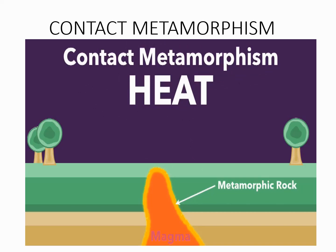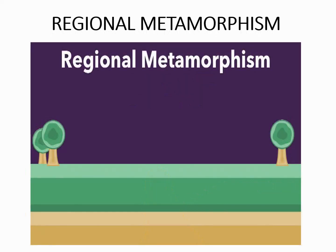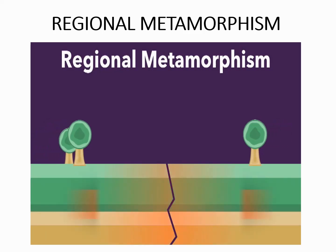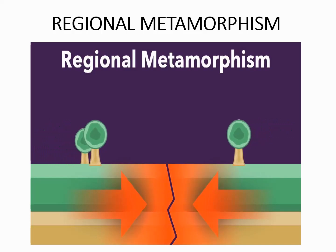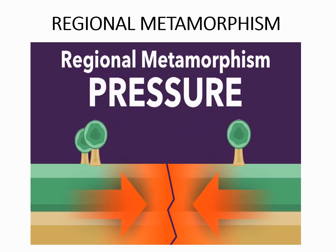Another way in which metamorphism takes place is called regional metamorphism. In regional metamorphism, large areas of the earth's crust or rocks are subjected to metamorphism. For example, if there is a crack or a fault in the crust and two plates are coming closer towards each other — a convergent plate boundary — the rocks on either side of the fault will be subjected to tremendous pressure, because of which the rocks would be metamorphosed. This is how regional metamorphism takes place, and it covers a very large area.